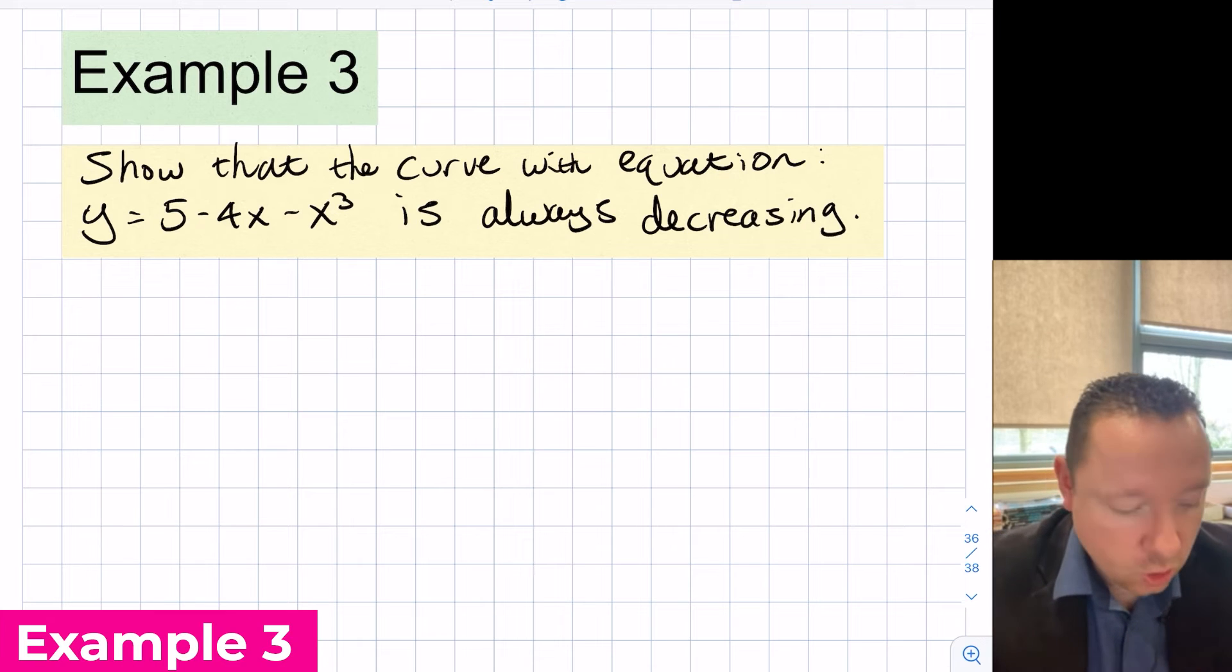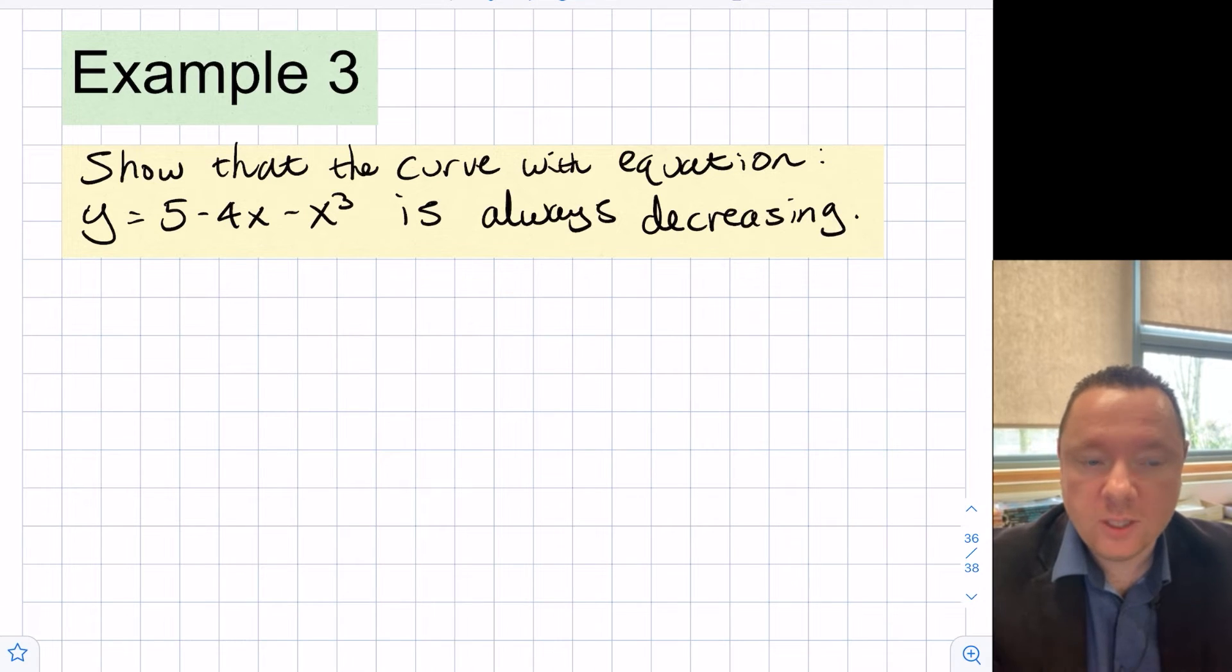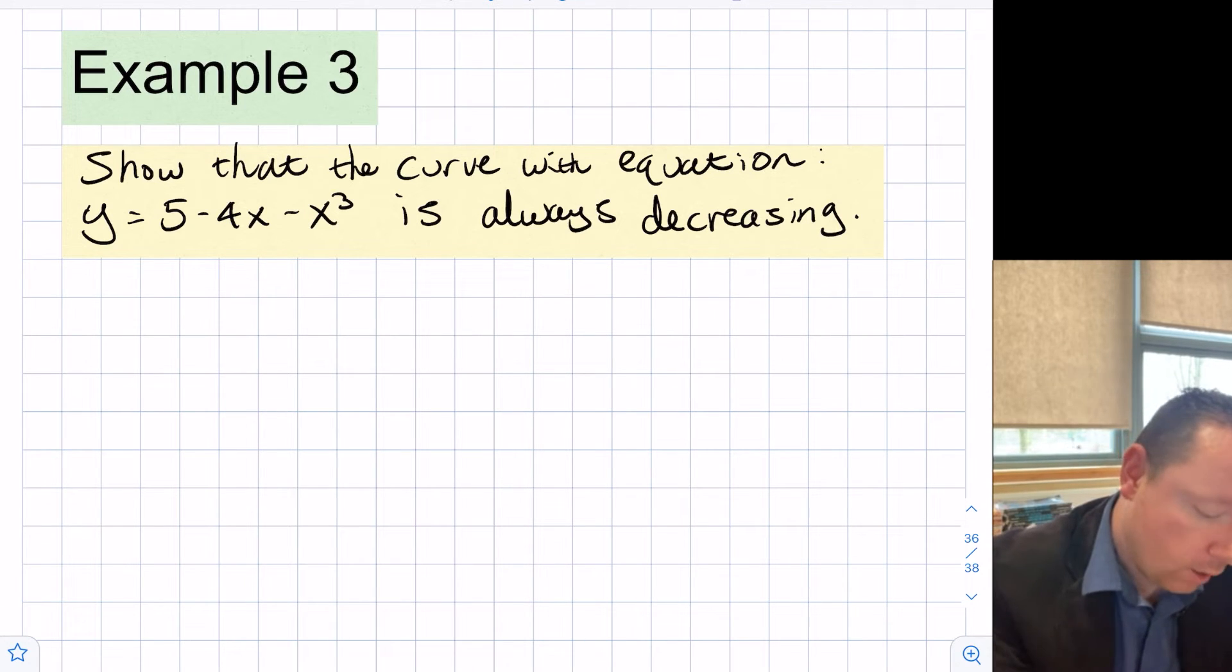Example 3 says show that the curve with equation y equals 5 minus 4x minus x cubed is always decreasing. So we want to show it's always negative. Let's start by working out dy/dx. The first term disappears, we get minus 4 and minus 3x squared.